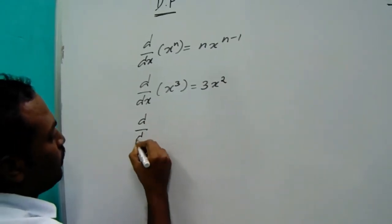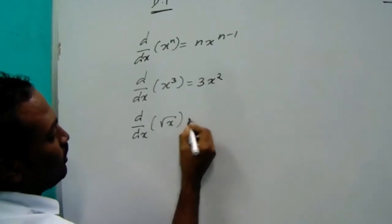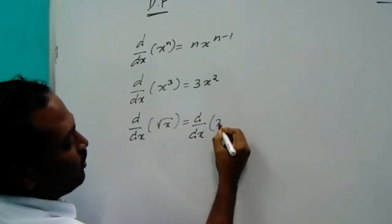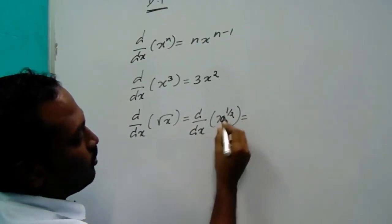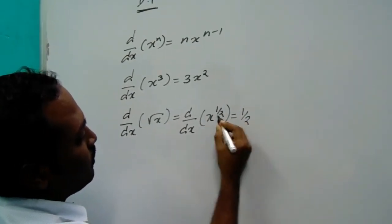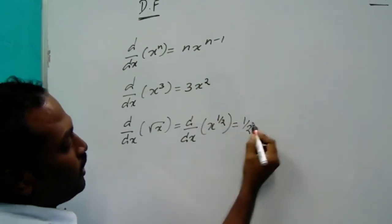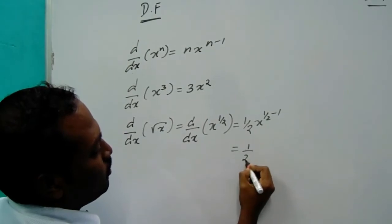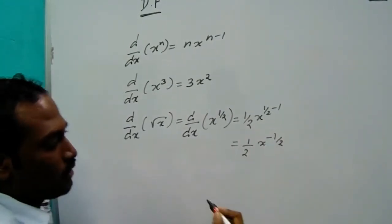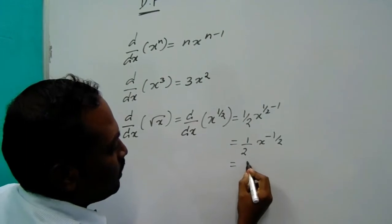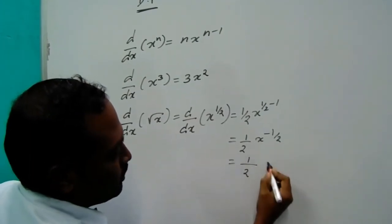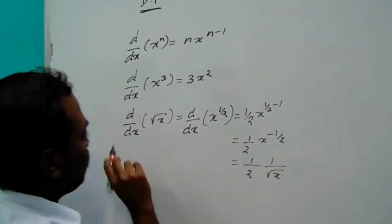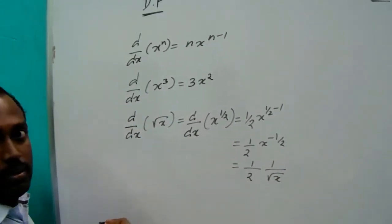Next, the derivative of root x. Root x can be written as x^(1/2). Using the format x^n, the derivative is 1/2 times x^(1/2 - 1), which gives 1/2 times x^(-1/2). In other words, the derivative of root x is 1/(2√x).